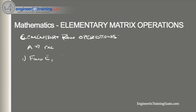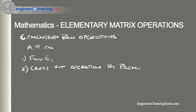Step two: once we define E, we carry out the operation by pre-multiplying A by E. So we need to carry out the operation by pre-multiplying A by E. Now that we've defined it, let's look at an example which will help better understand it.